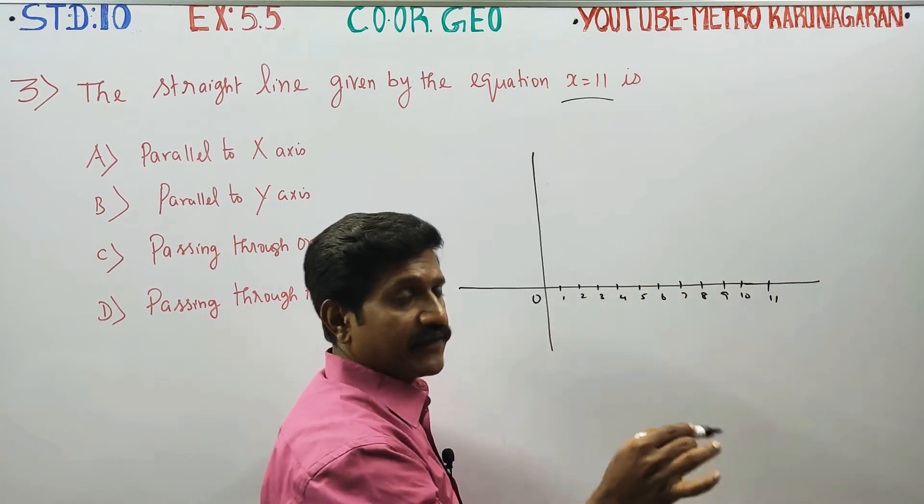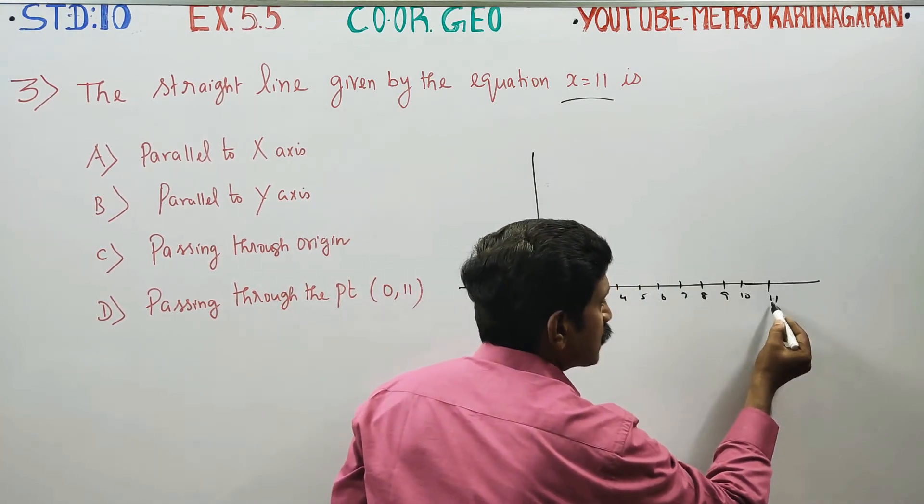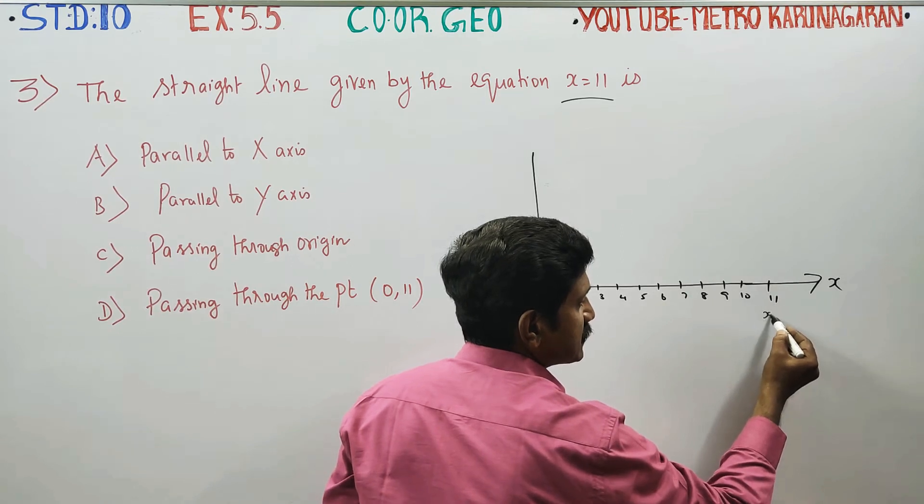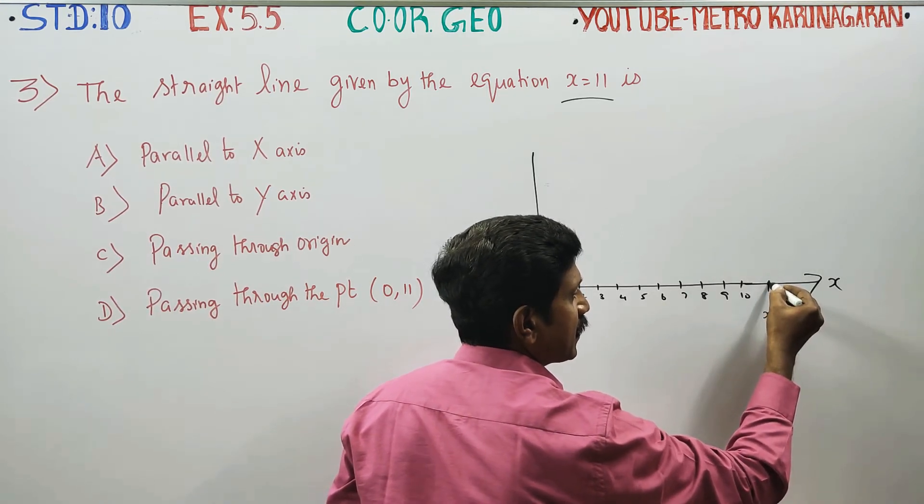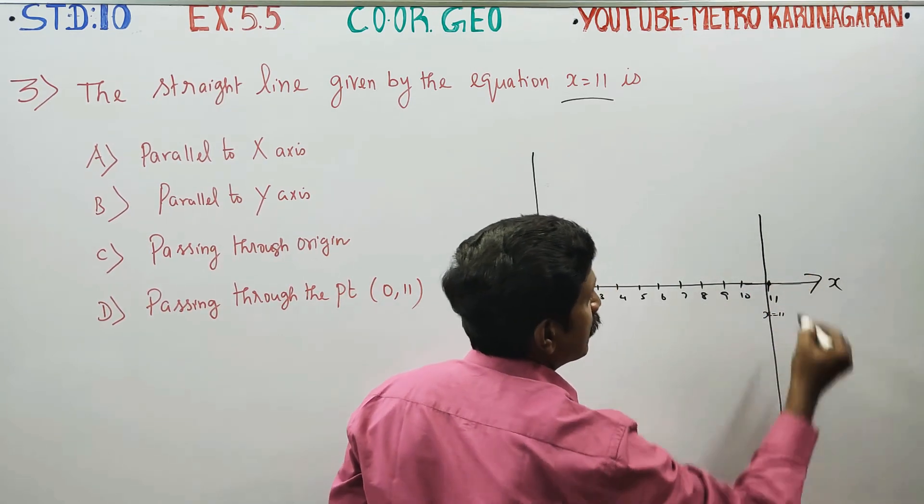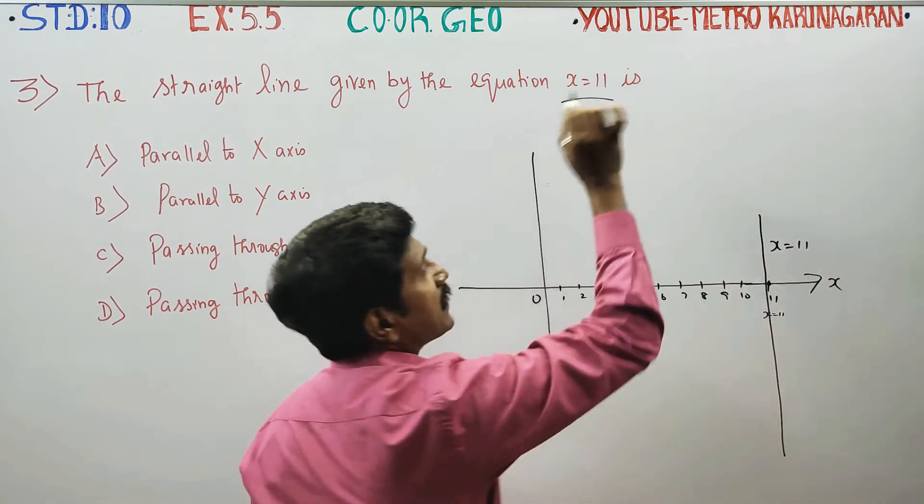X equals 11 in the line. This is 11, this is 11, this is 11 point. This is the straight line X equals 11, that is the first point.